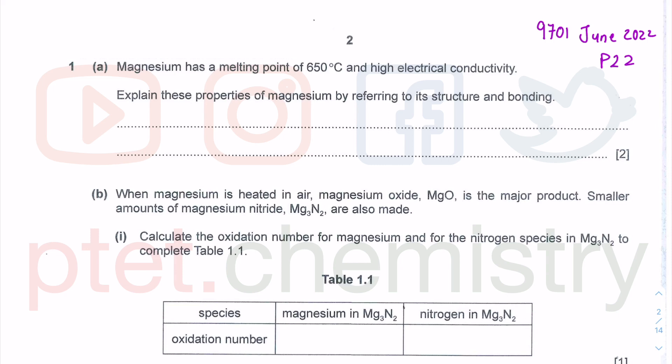In this first question, magnesium has a melting point of 650 degrees Celsius. This is way above room temperature. You will associate this as high melting point. Now this one has high electrical conductivity. So explain these properties. This is plural, and this has to be with respect to its structure as well as bonding. For two marks, first of all, you got to talk about the melting point. So magnesium is a metal. It's also a metallic element, so it exists as an element. So what we can say really is magnesium has a giant metallic lattice structure.